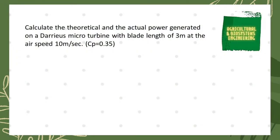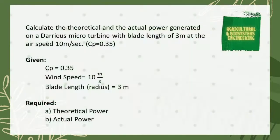In this video tutorial, I am going to show you the solution for this problem: calculate the theoretical and the actual power generated on a micro turbine with a blade length of three meters at an airspeed of 10 meters per second. Our power coefficient is 0.35. First, let's determine our given values. The power coefficient is 0.35, which we will use only in solving the actual power of the micro turbine. Next, our wind speed is 10 meters per second.